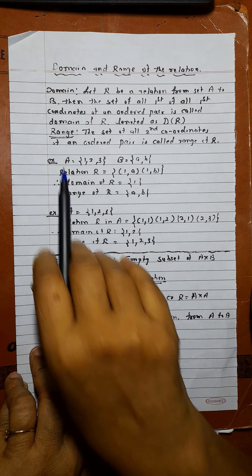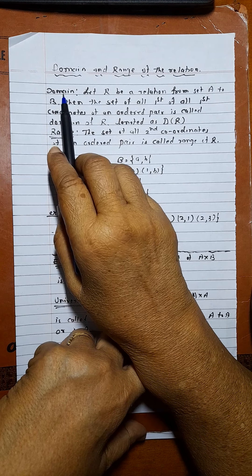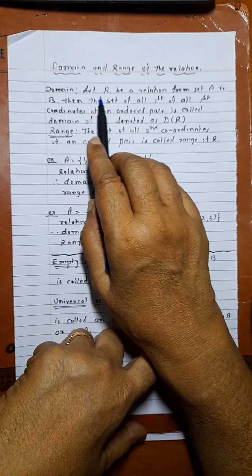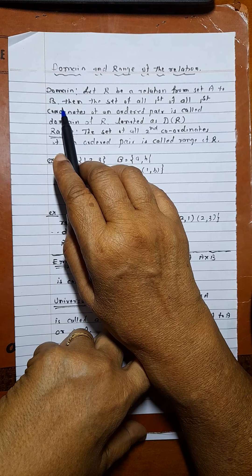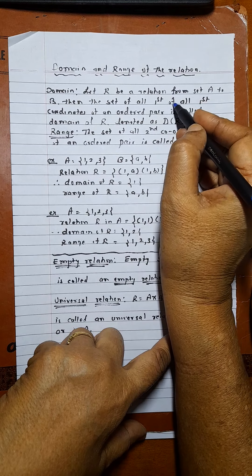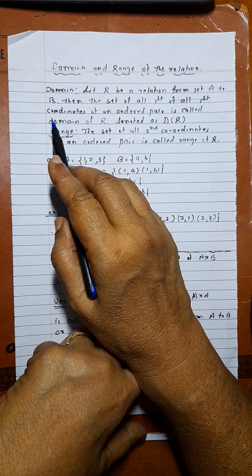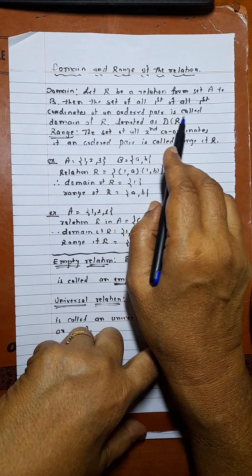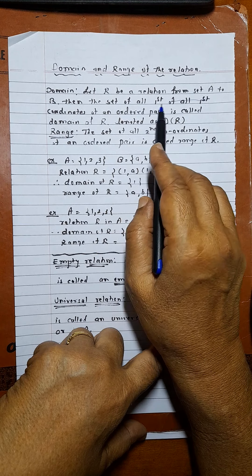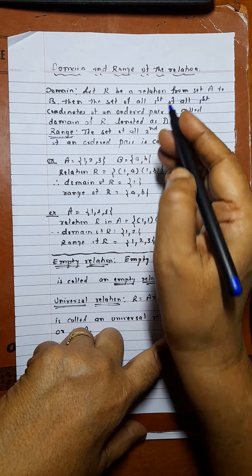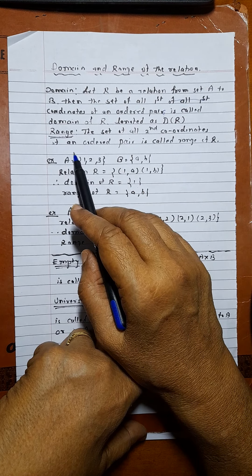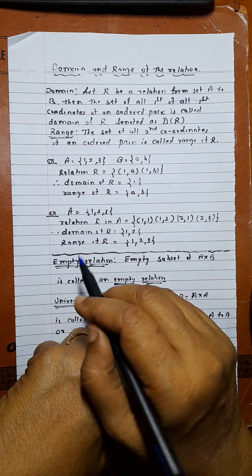Similar types of problems you can try on your own. Now I will define new things: domain and range of a relation. Let R be a relation from set A to set B. The set of all first coordinates of the ordered pairs is called the domain of R, denoted D(R). The set of all second coordinates of the ordered pairs is called the range of R.